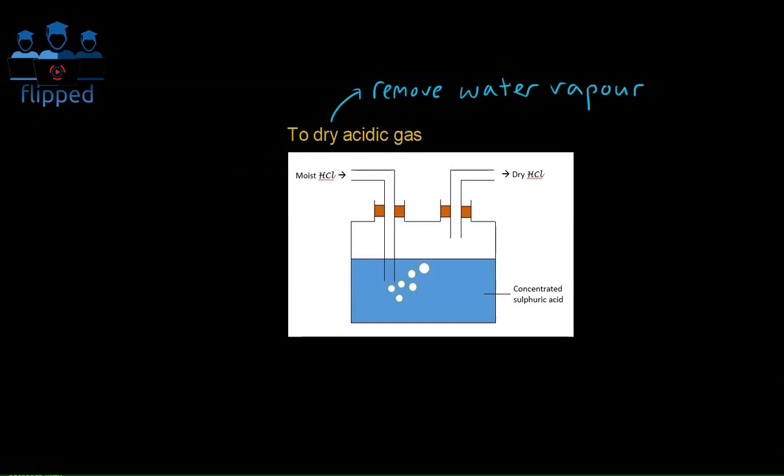There are three ways to go about doing it. The first one is to remove water vapour from acidic gas. So what's an acidic gas? If you recall, an acidic gas when placed in a solution will form a solution with pH less than 7. And that's how we define an acidic gas.